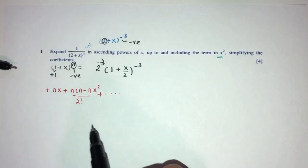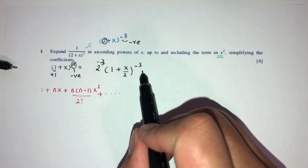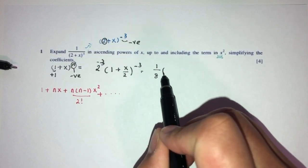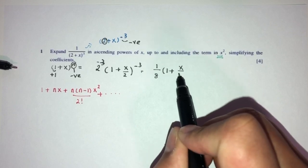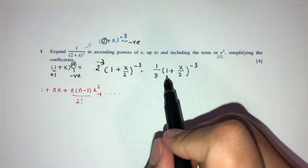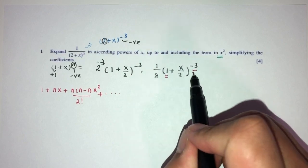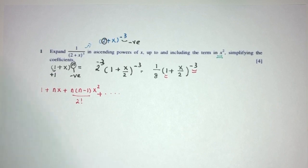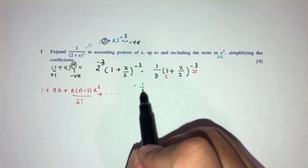Here we have minus 3 obviously. Now, we can simplify. It will be 1 over 2 power 3 is 8 times 1 plus x over 2 power minus 3. Now, given that this is 1 plus 1, and this is minus 3 negative, we can use this formula for the expansion. So 1 over 8 is just 1 over 8.